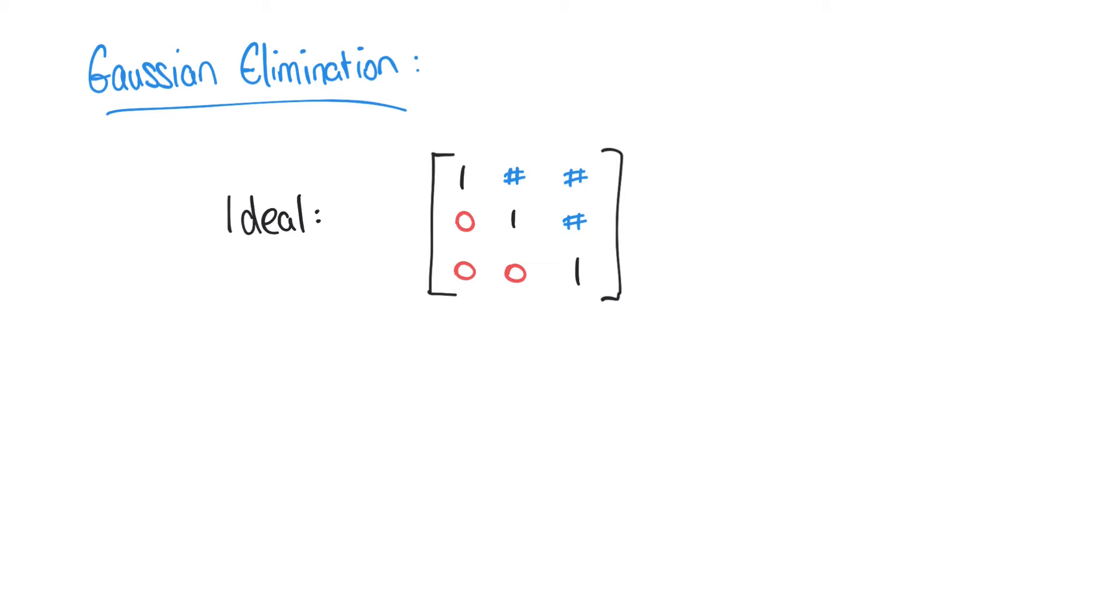So here's a visualization of the result that we want to achieve. And what you can see is that our diagonal terms from top left to bottom right are all 1 and the lower left hand terms are all 0.